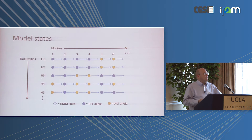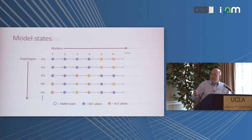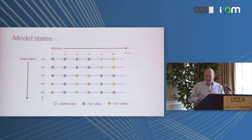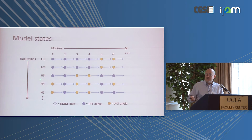The hidden Markov model has a number of components. The first is model states: there's a state for every pairing of a haplotype and a marker. The markers on the reference haplotypes are given as columns of a matrix; the reference haplotypes — H1, H2, H3, H4, and so on — are the rows. The states become the elements of that matrix, labeled with the allele the reference haplotype carries: blue for the reference allele and yellow for the alternative allele.